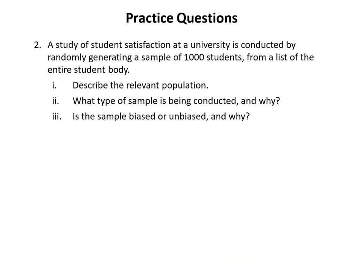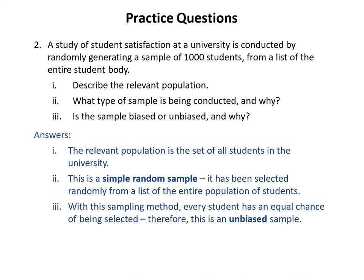In Question Two, a study of student satisfaction at a university is conducted by randomly generating a sample of 1,000 students from a list of the entire student body. The relevant population is the set of all students in the university. This is a simple random sample because we've simply selected from a single list of the entire population of students. The sampling method is unbiased because every student has an equal chance of being selected.